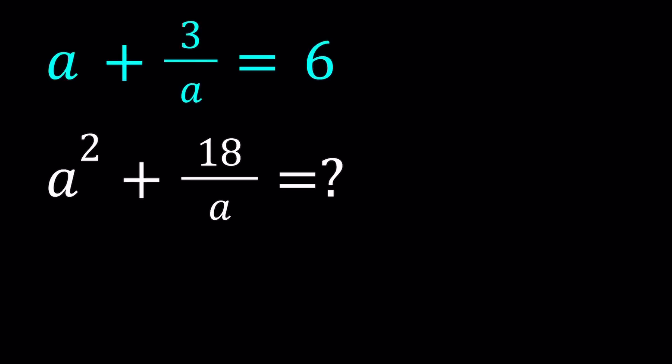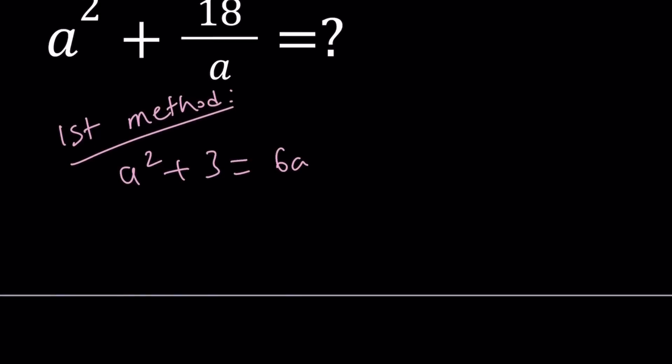So let's go ahead and evaluate the value of the second expression here by doing two methods. First method, I'm going to find the a value. So how do you solve this? Multiply both sides by a. You get a squared plus 3 equals 6a. And then bring the 6a over.